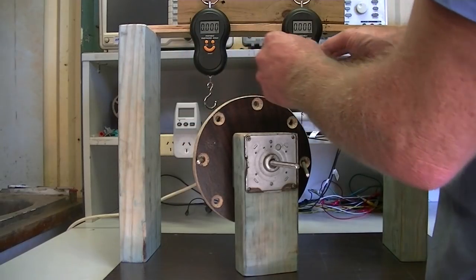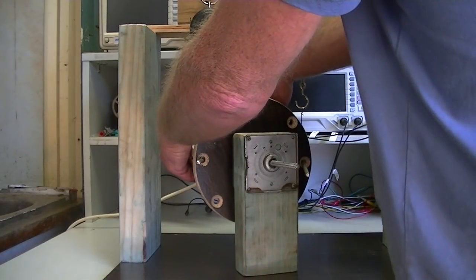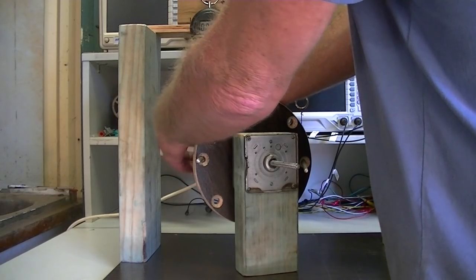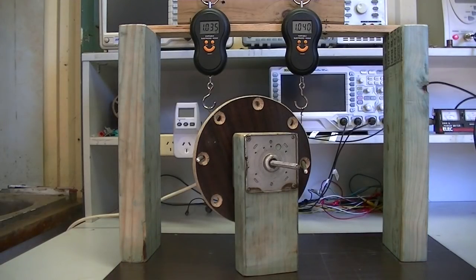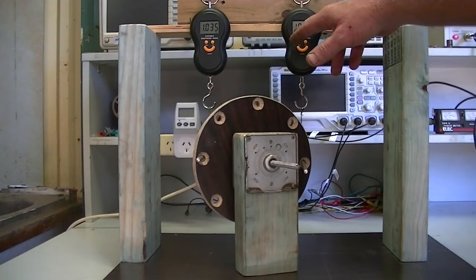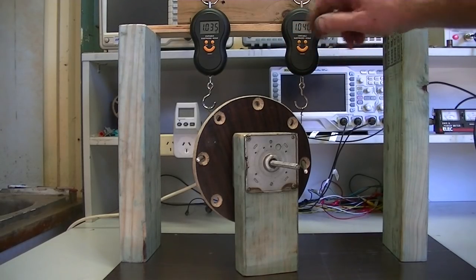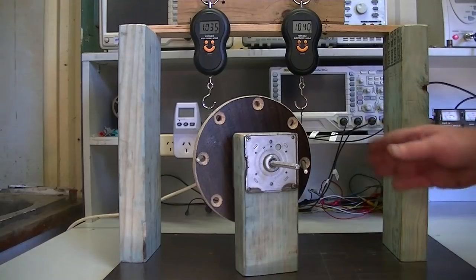Get our scale to zero out. As we have. Put our spring back up. 1.035. 1.040. So we're within, what's that, 5 grams of each other. So this is good.